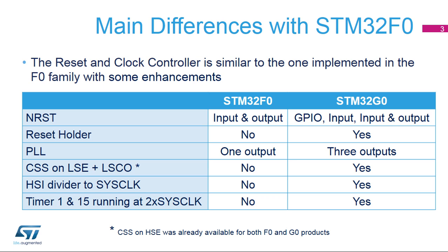The third usage is a GPIO. In this mode, the pin can be used as a standard GPIO. Reset is only possible from the device's internal reset sources. If enabled in the option bytes, the reset holder option can be used to ensure that the pin is pulled low until its voltage meets the VIL threshold.